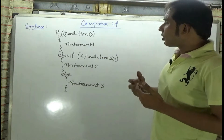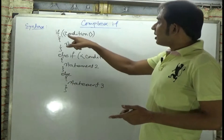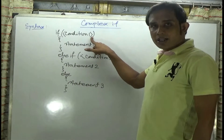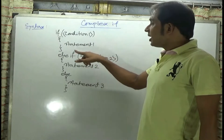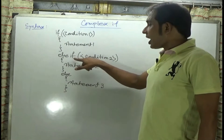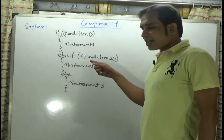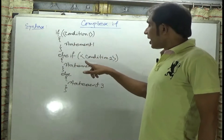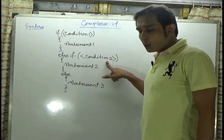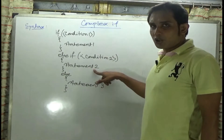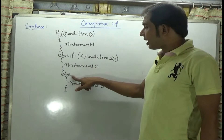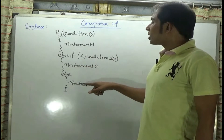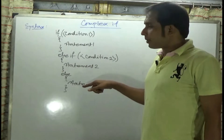In case of the complex statement, you can see: first I write the if block and then give condition 1, then statement 1, then I write else if. I am just adding another condition in the else block of the first if. And here I write condition 2, then statement 2, and then the else block for this if statement. So this is the structure, or the syntax, of the complex if statement.